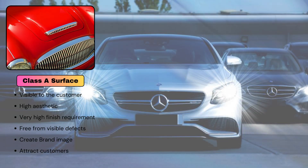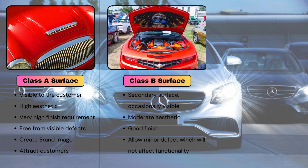To summarize: Class A surfaces focus on aesthetics, polishing, and high quality surfaces, and should be free from any defects. Class A surfaces are the outermost surfaces of the product, directly visible to the customer. They attract the customer toward the product and create the brand image of the company. Class B surfaces are secondary surfaces that we can see occasionally — under normal conditions we cannot see them.